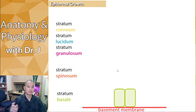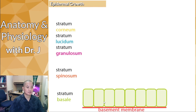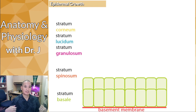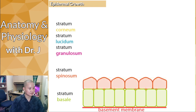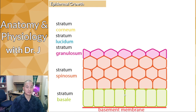Why is it called the stratum basale or germinativum? Germinate sounds like generate — this is where you generate new cells in your epidermis. The stem cells here undergo mitosis and regenerate continuously. As they divide, they push older cells further from the basement membrane, forming the other layers that become more and more superficial.